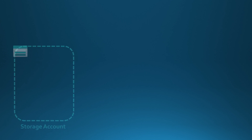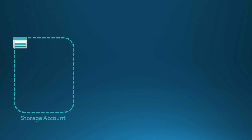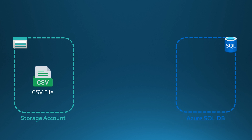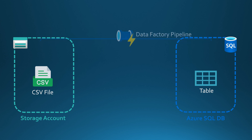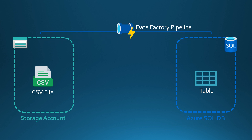Let's start by imagining a situation where we have a storage account. In that storage account, we have a CSV file. Then we have an Azure SQL database, and in that database we have a database table. Now we would like to copy the contents of that CSV file into that table. Of course, we can use a Data Factory pipeline to do this copy and add a copy activity to that pipeline. This setup will get this job done very easily.